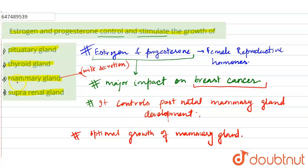तो यहाँ पर देखिए, option 3 is the correct one — that is mammary gland. So I hope now you have a better understanding of this question. Thank you very much.